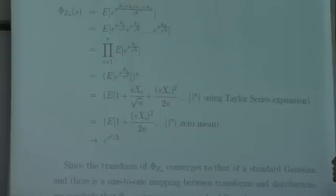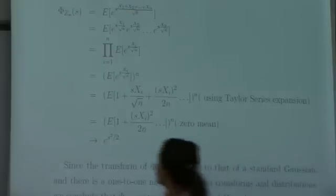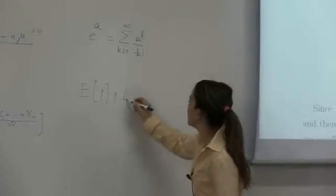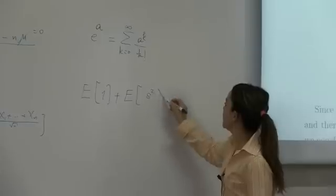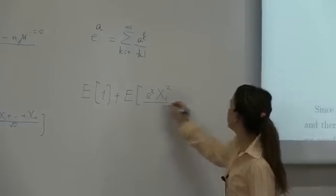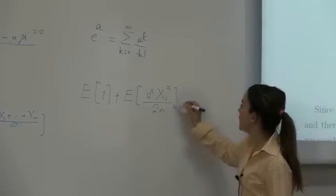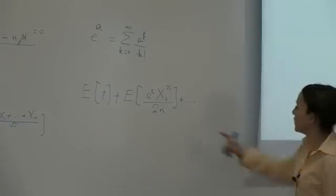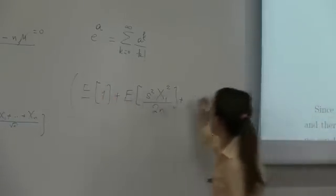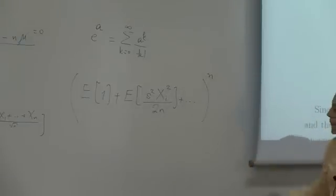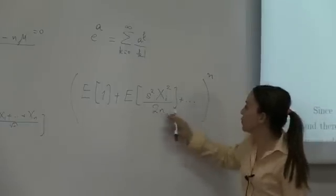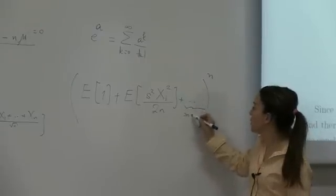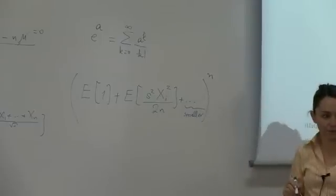Now, I can also write this as the expectation of 1 plus the expectation of s squared xi squared divided by 2n plus other terms with higher order values of n raised to the nth power. Now, these terms, what's happening to these terms as n grows? As n grows, these terms are getting smaller and smaller. So, these terms are the smaller terms as n grows.